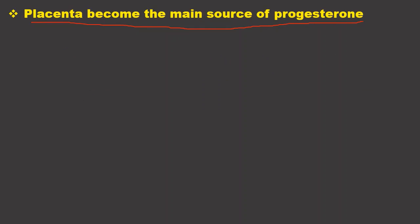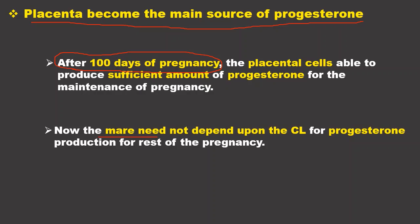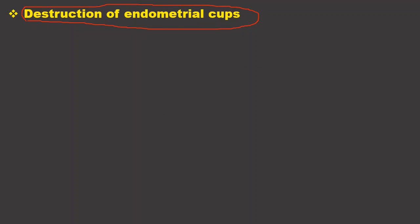The placenta eventually becomes the main source of progesterone. Initially during development, the placenta produces only a very little amount of progesterone, so the horse requires the additional and primary corpus luteum as progesterone sources. After approximately 100 days of pregnancy, the placenta is able to produce a sufficient amount of progesterone for maintenance, so the mare no longer needs to depend on the corpus luteum or the endometrial cups.